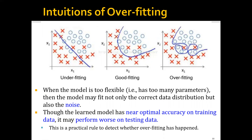But when the model is actually too flexible — meaning it has too many parameters — the model may fit not only the correct data distribution, but also the noise, which is the true noise here. This is very bad. Although this learned model has near optimal accuracy on the training data, it may actually perform worse on the test data. This is a practical rule to detect whether overfitting has happened.